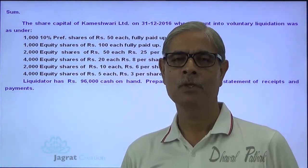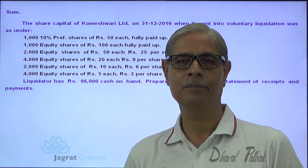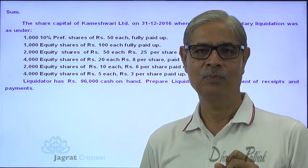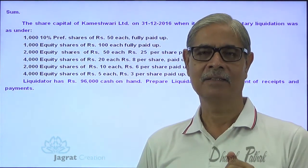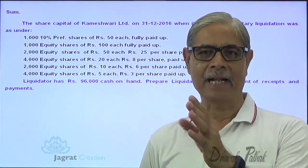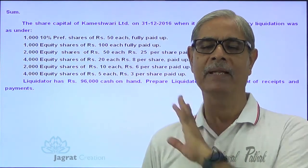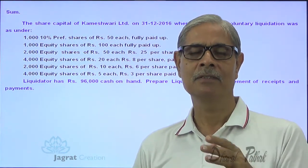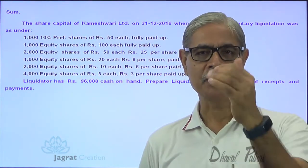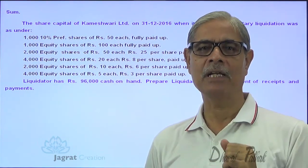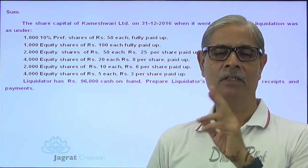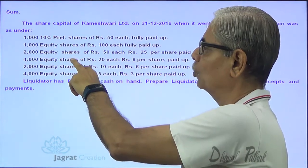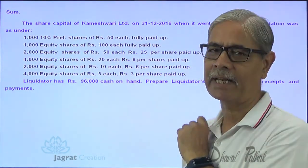The important point to be explained in this sum is how the pari passu suffering is to be accounted for while preparing this receipts and payments statement. All shareholders should suffer proportionately and equitably — pari passu — in case of liquidation of a company. Here there are 1, 2, 3, 4, and 5 types of equity shares.